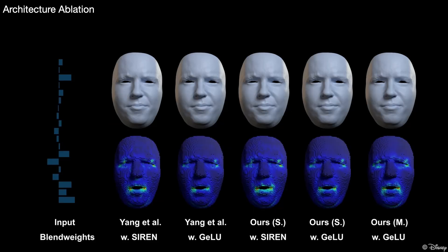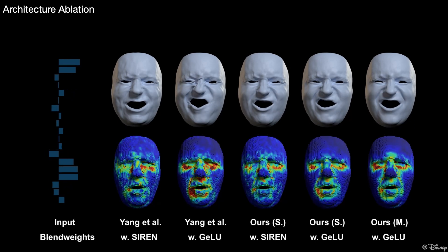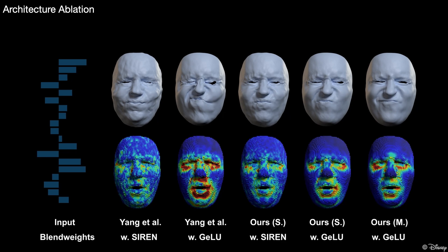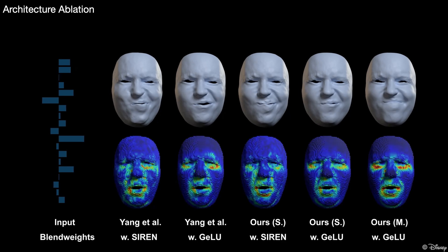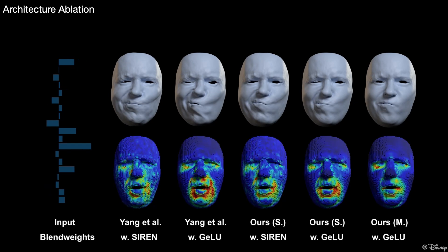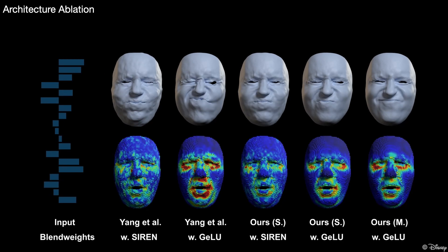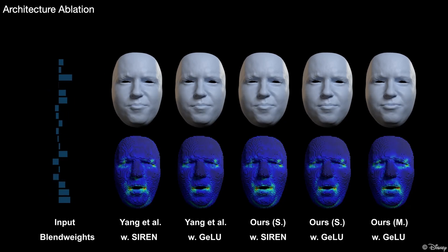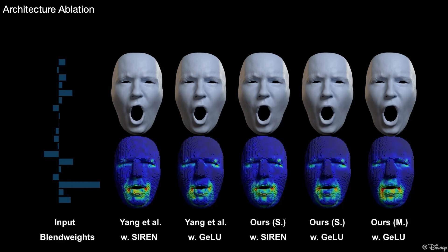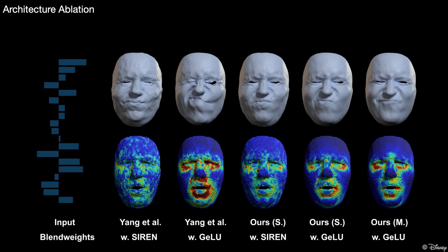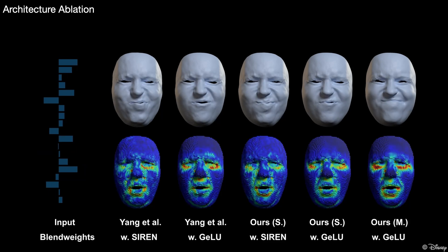Our work is inspired by the recent single-identity model of Yang et al. However, we made several changes. First, we replaced all siren layers except the first with Galoo, since siren was prone to noise and sensitive to initialization. Second, we used a tanh activation function to constrain the modulation codes, which removes most artifacts. Finally, our multi-identity model produces even better animation results.